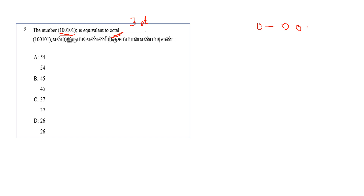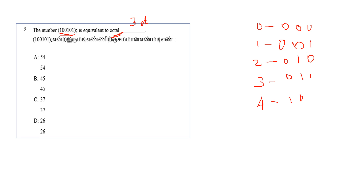The easy method: take three digits at a time. Zero = 000, one = 001, two = 010, three = 011, four = 100, five = 101. So grouping the binary number in sets of three digits, we convert each group to its octal equivalent.